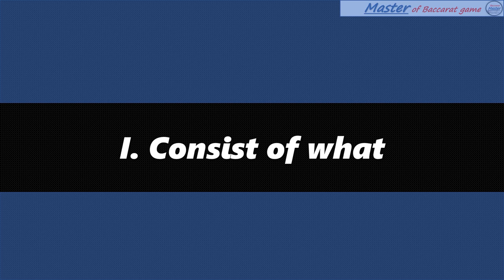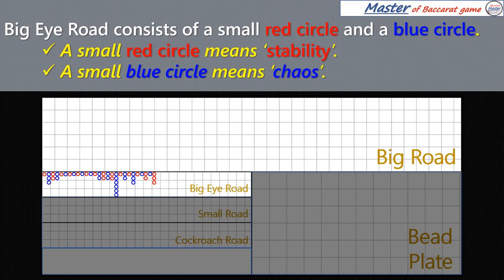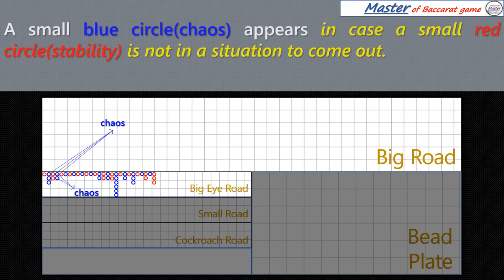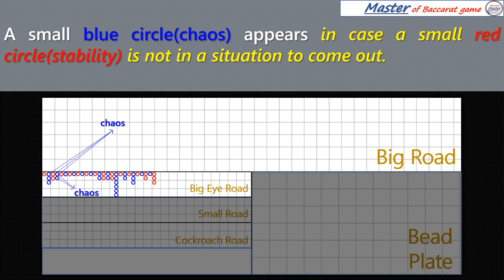What does the Big Eye Road consist of? It consists of a small red circle and a blue circle. A small red circle means stability; a small blue circle means chaos. A small red circle appears in the following cases: (1) when the flow of the present column is the same as the front first column's on the Big Road; (2) when the present column is maintaining after being broken the flow of the front first column on the Big Road. A small blue circle appears when a small red circle is not in a situation to come out.